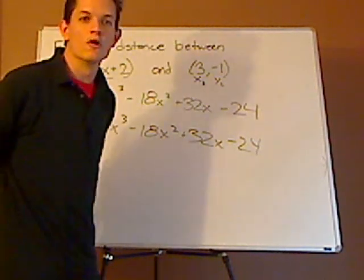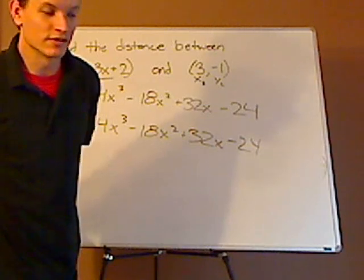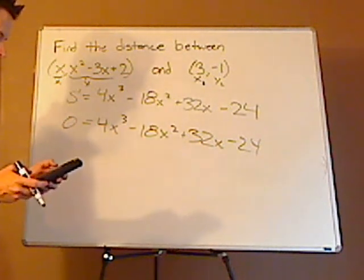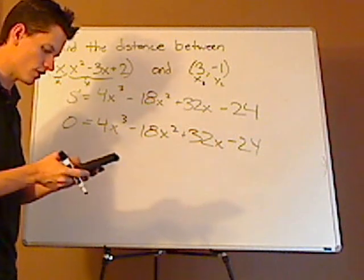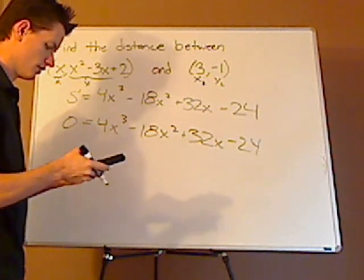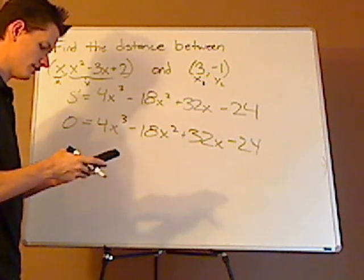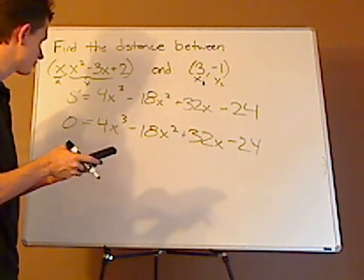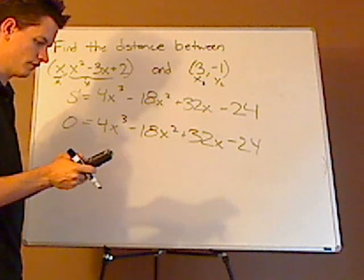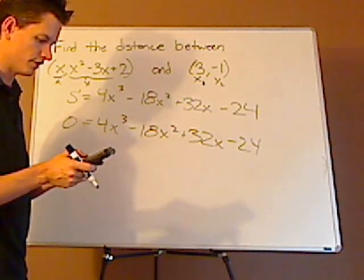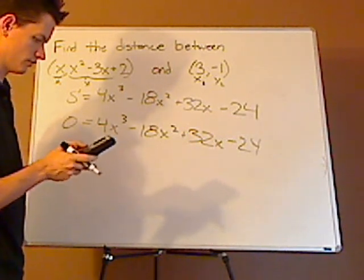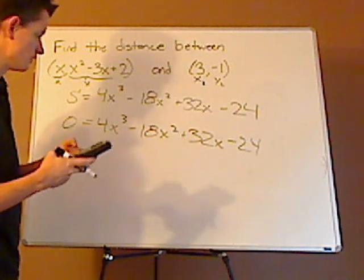Now I didn't intend this, but what you can do to make things easier on yourself is you can use your graphing calculator by simply just typing it in to your calculator. Y equals 4x to the 3rd minus 18x squared plus 32x minus 24. You graph it, and it looks like it's at 2. I'm going to trace it. Yeah, it has a 0 at 2.